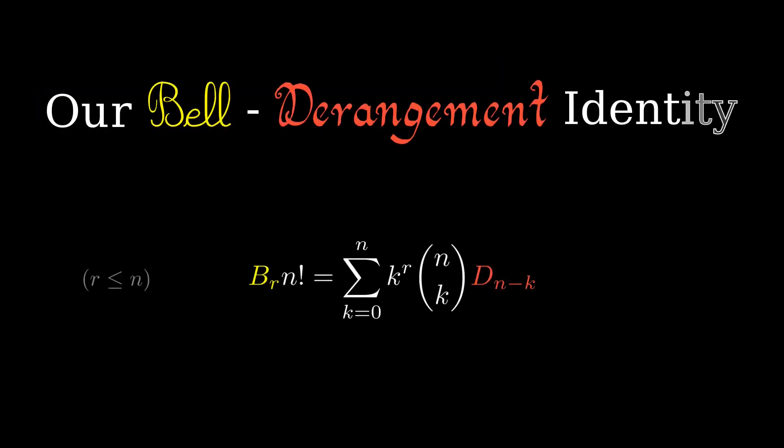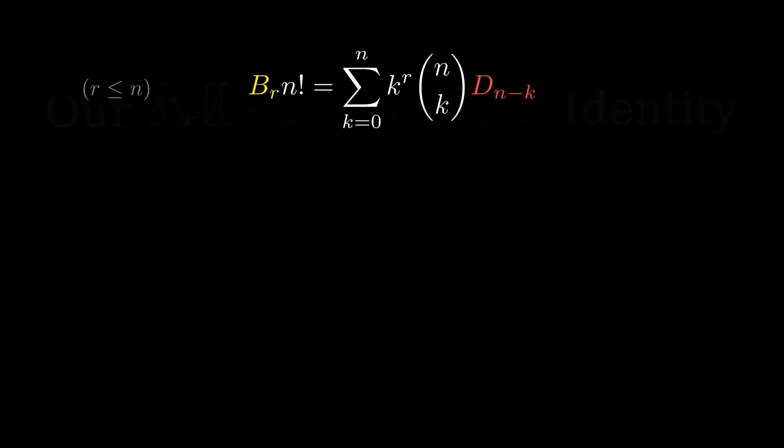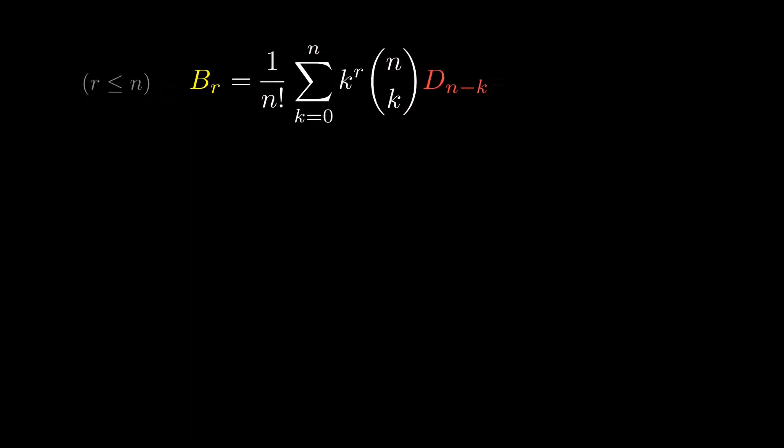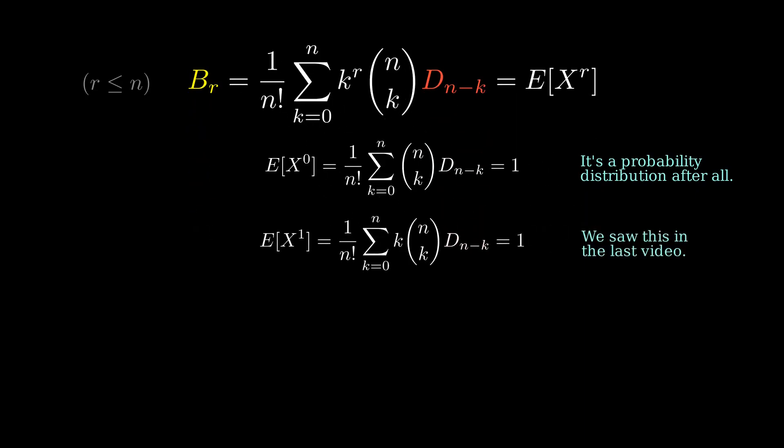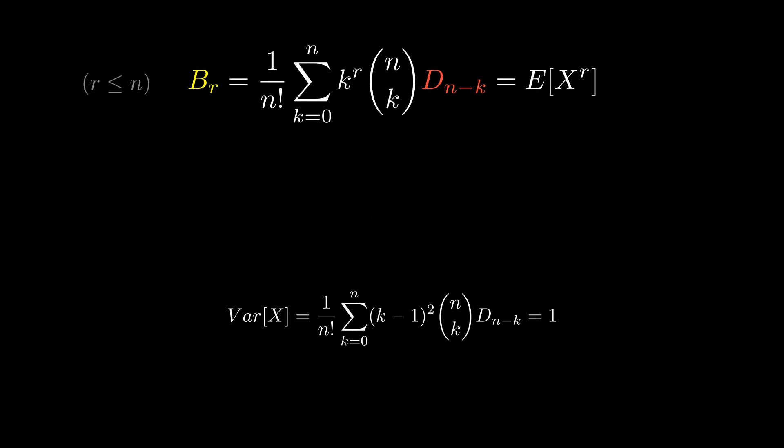By showing this bell derangement identity, we've seen how the bell numbers give the moments of the fixed-point distribution. We've seen these three moment expressions, two raw and one central, all happen to equal one. Most notably from this video, the variance. But of course, I can't leave you without posing a challenge.